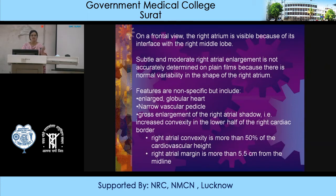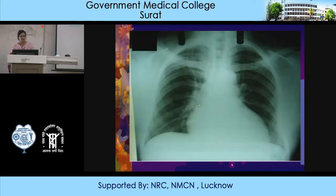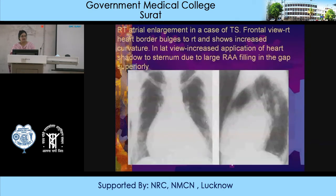You can see the right atrium is enlarged, projecting much beyond the para-midline. In a case of TS, right atrial enlargement is seen — the right heart border bulges to the right and shows increased curvature. On the lateral view, there is increased apposition of the heart shadow to the sternum because of the large right atrial appendage filling in the superior gap.